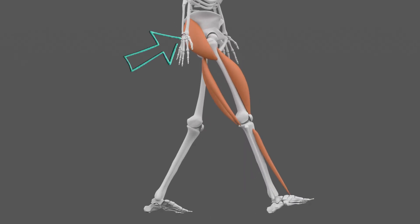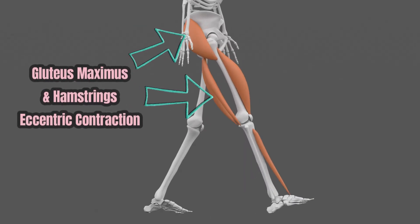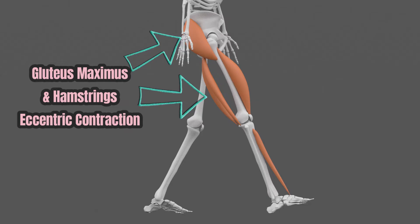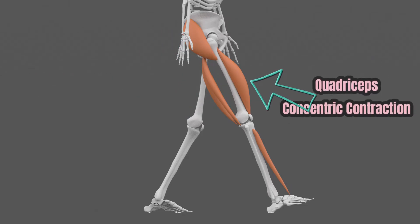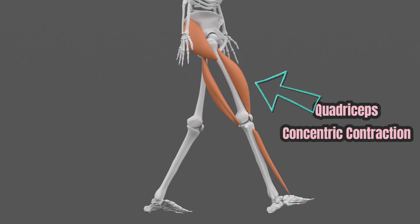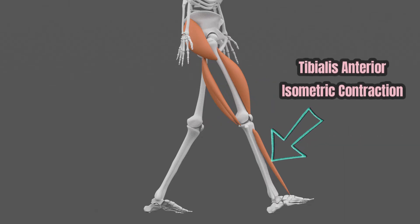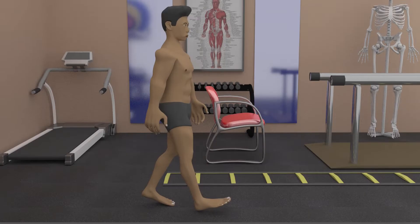If you take a snapshot of this phase, there is gluteus maximus and hamstrings eccentric or lengthening contraction at the hip to prevent too long of a step to not compromise knee stability. There's also a quadriceps concentric or shortening contraction at the knee to keep it in a neutral position, and tibialis anterior isometric contraction at the ankle to keep it in neutral position.